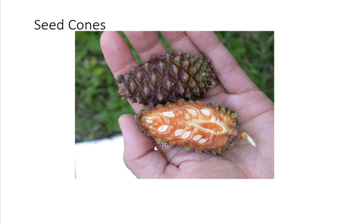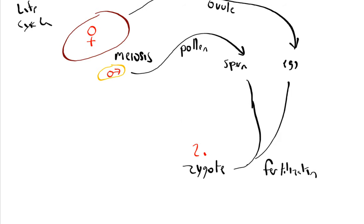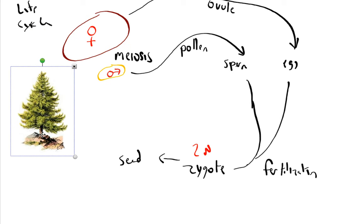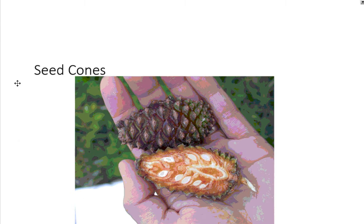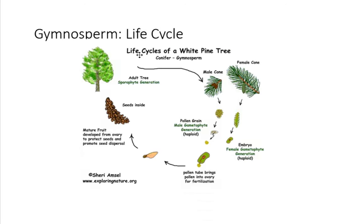The diploid zygote becomes a seed, which can grow up to be the sporophyte — a full pine tree or cedar or some sort of gymnosperm — which has cones. Meiosis produces the gametophytes, sperm and egg are made, fertilization occurs, and so the gymnosperm life cycle continues. Seed cones again — that completes the gymnosperm life cycle.